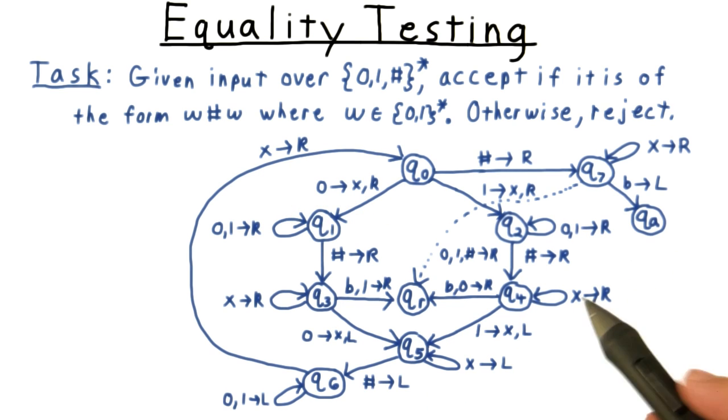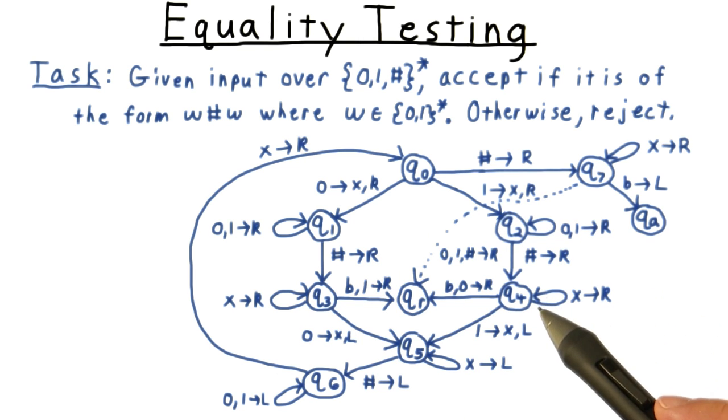As Turing machines go, this is a pretty simple program. But as you can see here, the state diagram gets a little messy. Like the Sipser textbook, I've used a little shorthand here in the diagram.